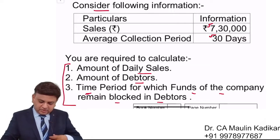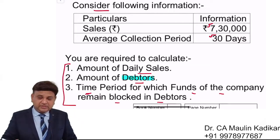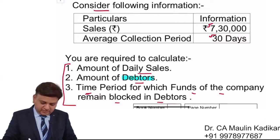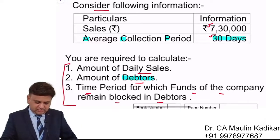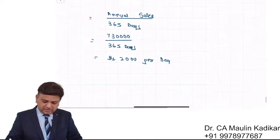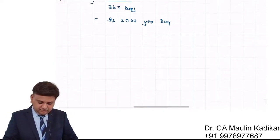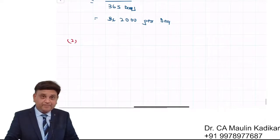The question further asks: what is the amount of debtors? The question provides the information that the average collection period is 30 days. So, let us read and answer the second question regarding the amount of debtors.